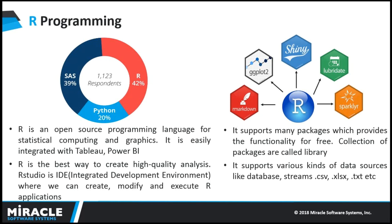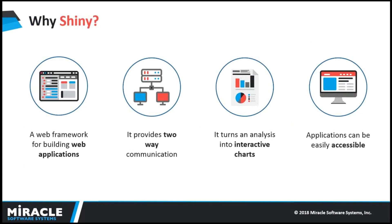Shiny is a web framework for building web applications using R. It is a package in R. Our Shiny web application is composed of two files: one defines the user interface known as UI, and the other defines how the server deals with the user interface, executing any required R code, known as the server. The Shiny application runs locally, but we can also deploy it to shinyapps.io, which is secure and easy to use. It also provides two-way communication — the client sends a request to the server, and the server responds to the client request.